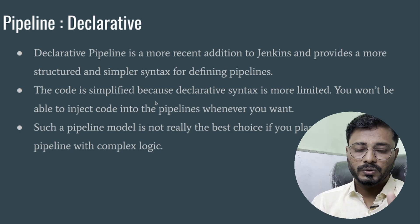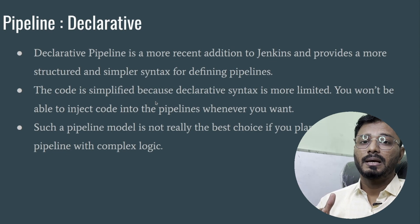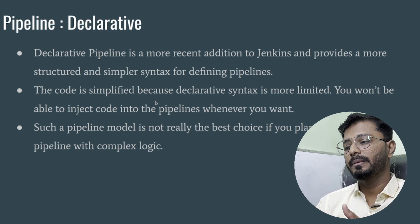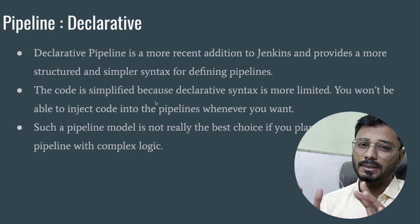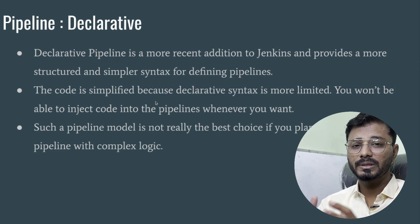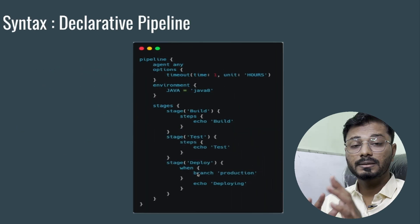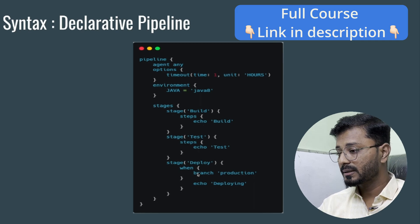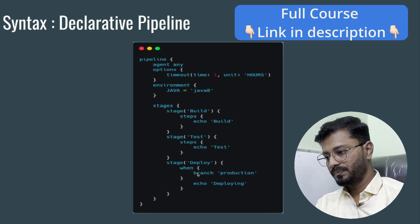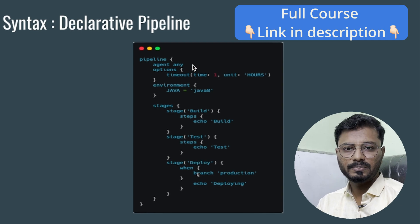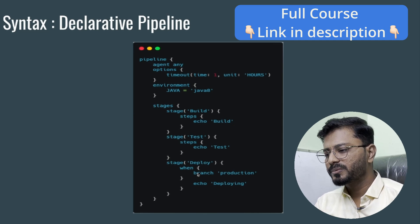Now we'll look at declarative pipeline. Declarative pipeline is a newer, more recent addition that provides a simpler, more structured way of creating a pipeline. The code is simplified, but the declarative approach is somewhat limited — you cannot insert arbitrary code in the middle of the pipeline, so it is not ideal when you have complex logic in your build.